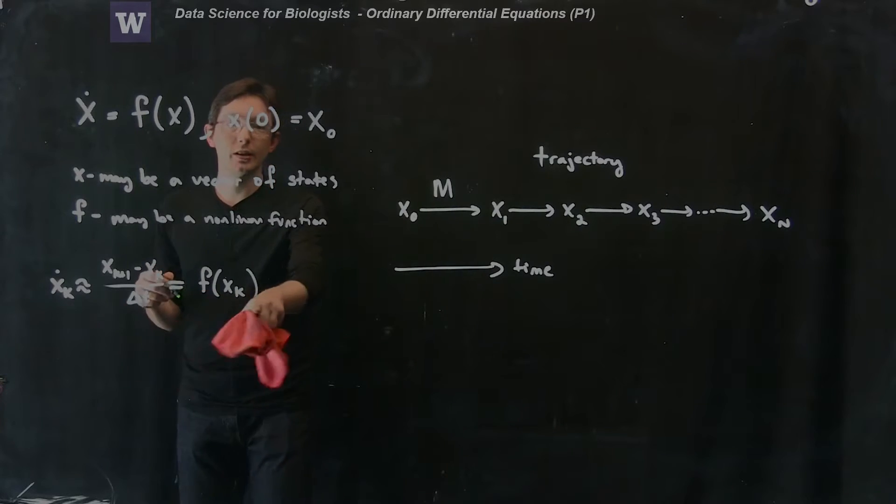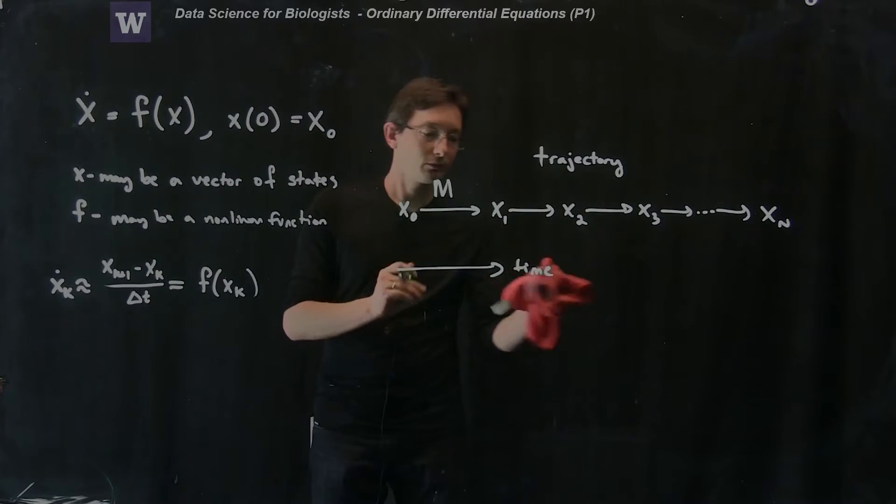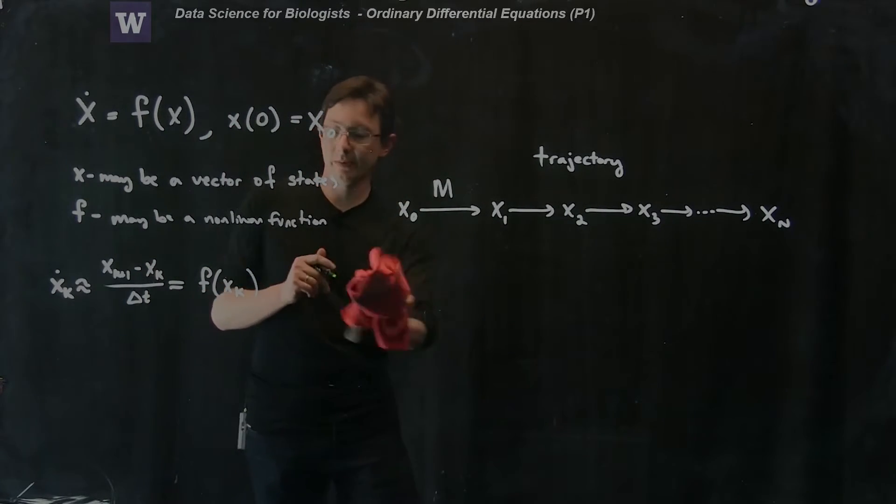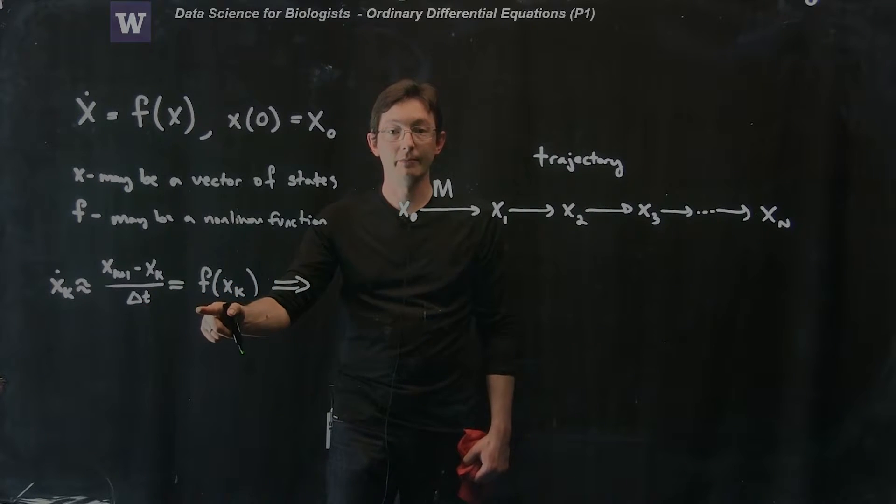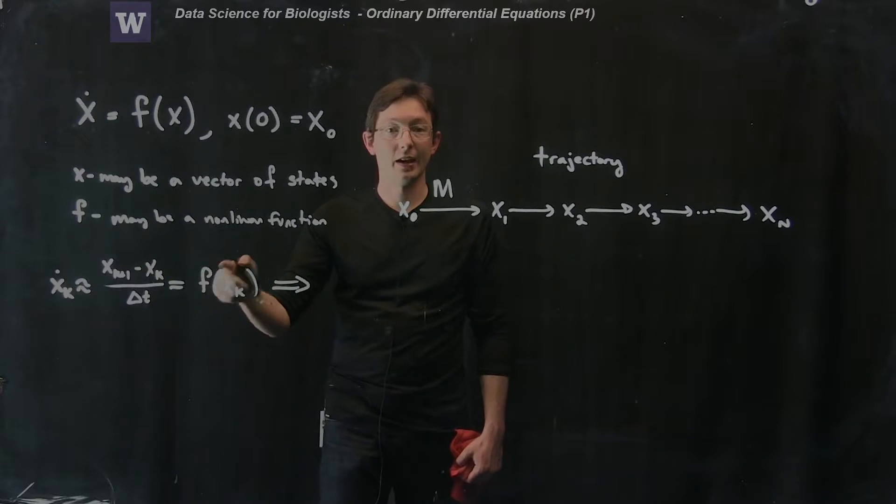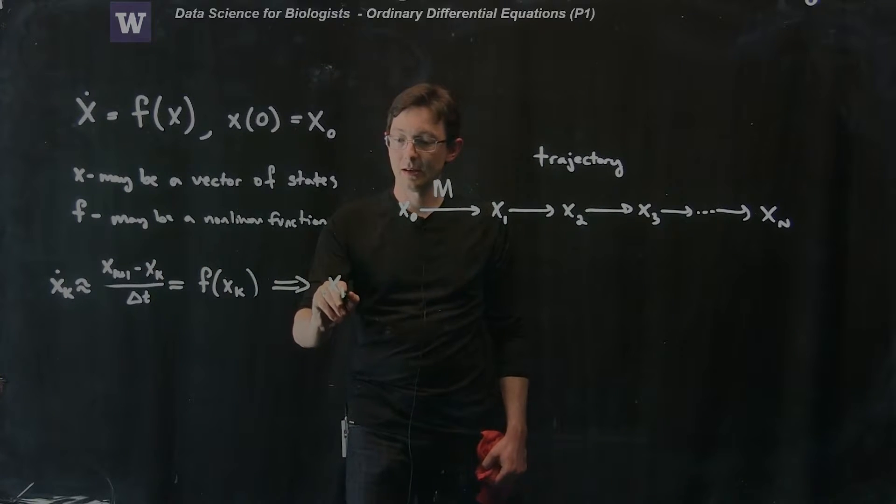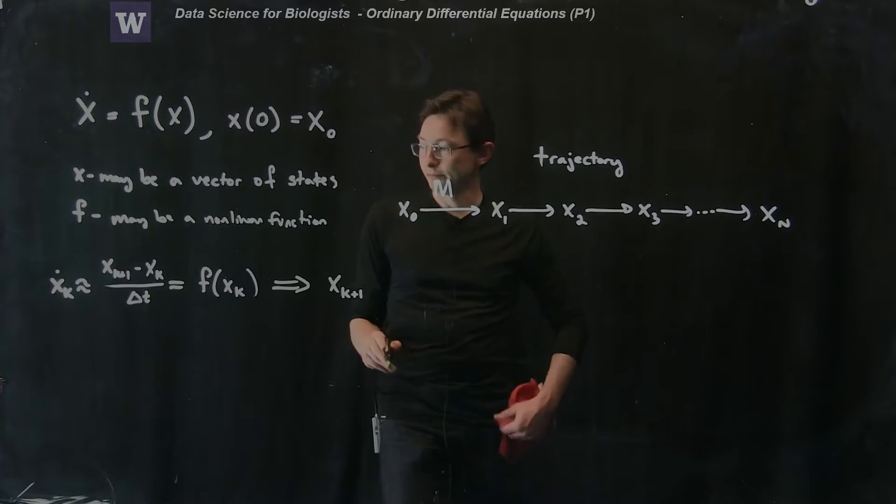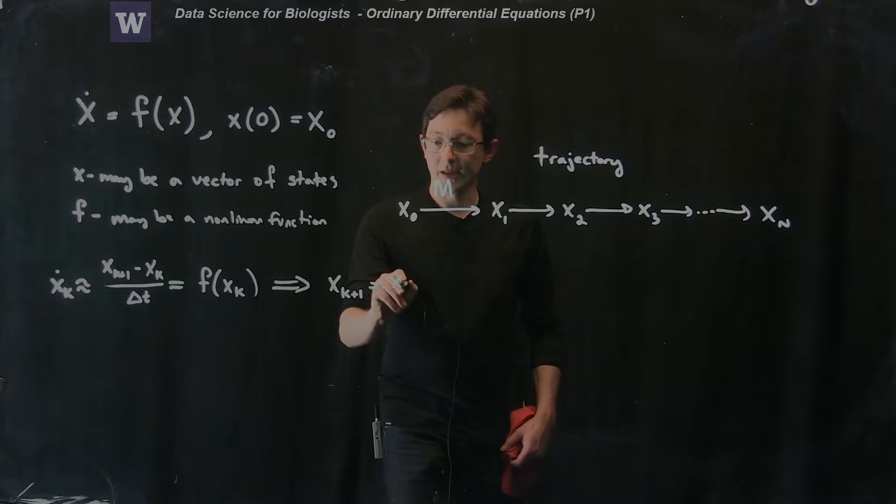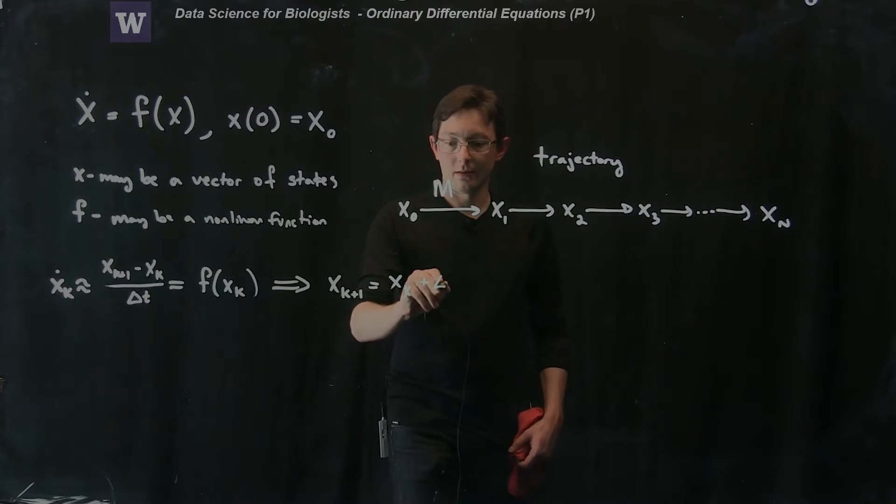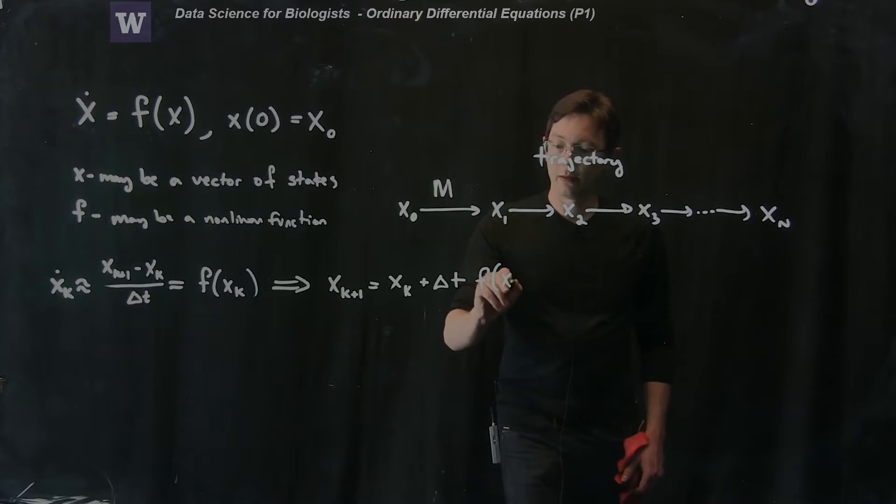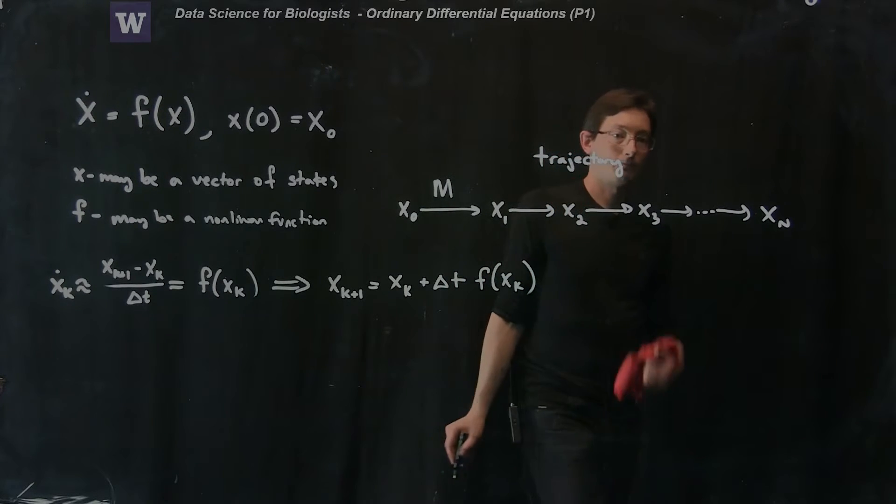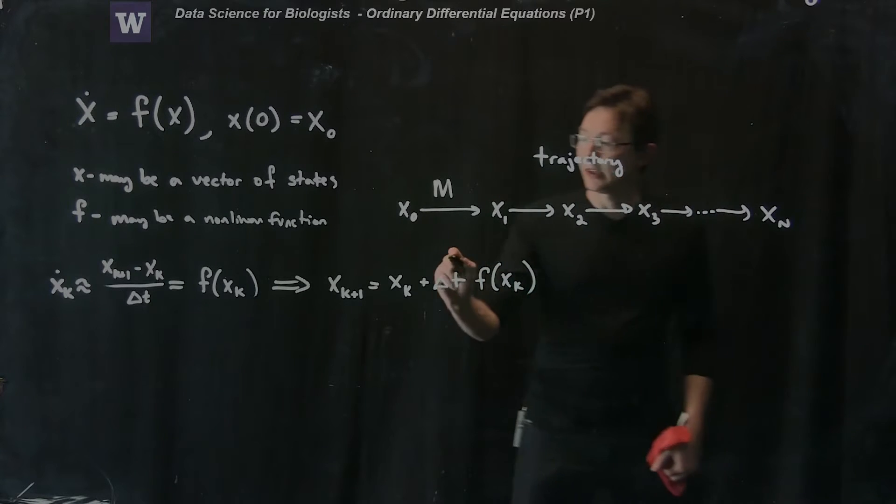And so now we can actually unwrap this quantity and get a pretty simple expression. So what I'm going to do is I'm going to multiply both sides by delta t and I'm going to add x of k. So I get x_k plus 1 equals x_k plus delta t times f of x_k.